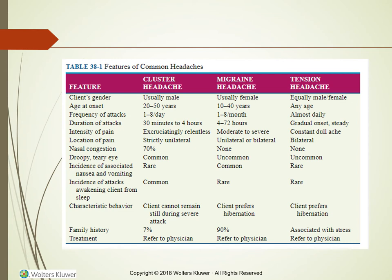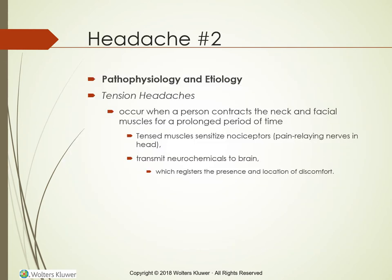Comparing the headache types: cluster headaches usually affect males aged 20 to 50, can occur one to eight times per day, and last 30 minutes to four hours; nausea and vomiting are rare, but attacks awakening the client from sleep are common. Migraines usually affect females aged 10 to 40, occurring one to eight times per month, lasting four hours to three days. Tension headaches are the most common, affecting males and females equally at any age, with an almost daily, gradual onset.